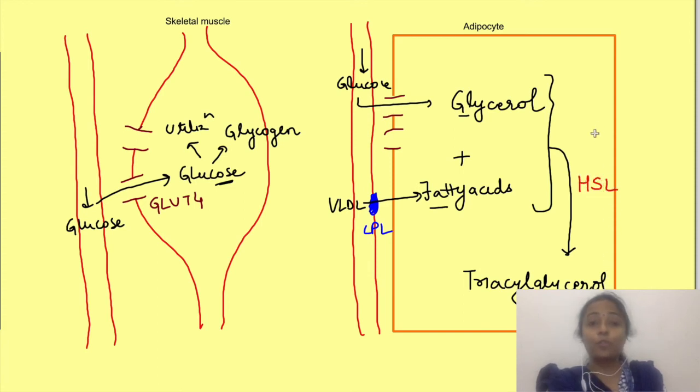Also insulin inhibits hormone sensitive lipase in fat cells. This lipase breaks down stored triacylglycerol into fatty acids and glycerol. Thus by inhibiting hormone sensitive lipase, insulin prevents hydrolysis of triglycerides in adipose tissue. So we have seen two lipases here: lipoprotein lipase causing entry of fatty acids into the adipose tissue, this is promoted by insulin; and the one causing lipolysis of triacylglycerol from adipose tissue, that is hormone sensitive lipase, it is inhibited by insulin.